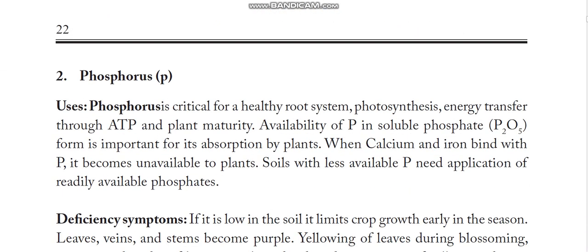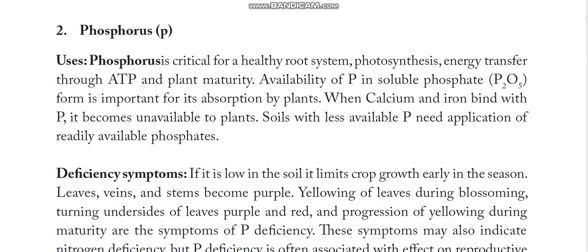Coming to phosphorus, which is also very important. It is mostly available to plants in the P2O5 phosphate form. When calcium and iron bind with phosphorus, it becomes unavailable to the plants — that is to be considered. Soils with less available phosphorus need application of readily available phosphates. Sometimes phosphorus may be present in the soil but bound with calcium and iron, making it unavailable, which is why phosphate-solubilizing bacteria are to be added.